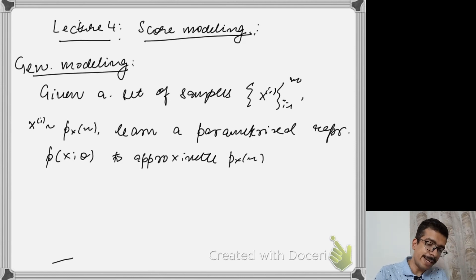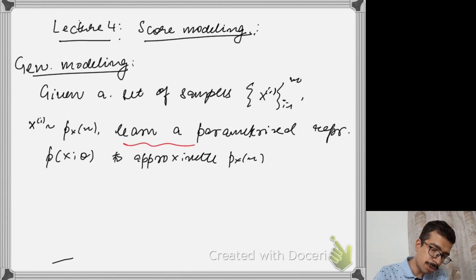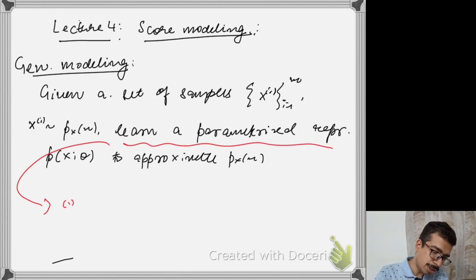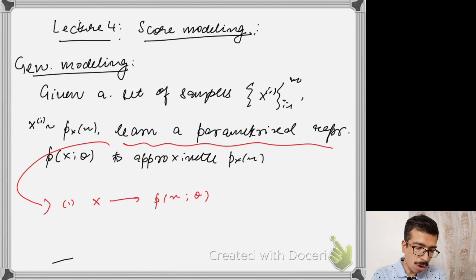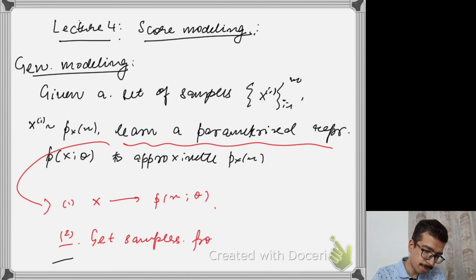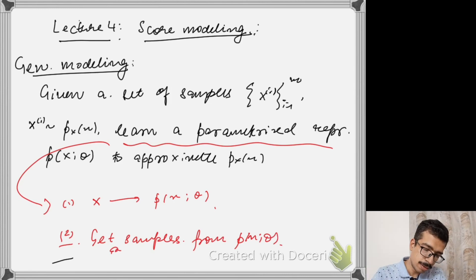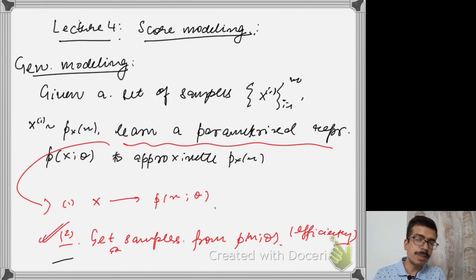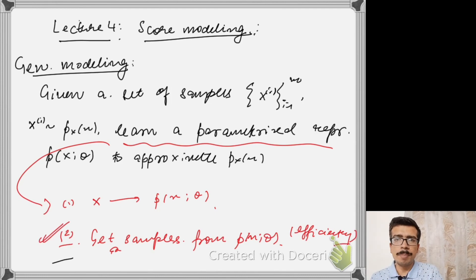When I say learning a representation, it can have two meanings. Either it could be some sort of expression so that given an x, I should be able to recover p_X(θ). Or the second meaning could be that we can get samples from p_X(θ) efficiently. Most of the algorithms actually try to enable us to get these samples.